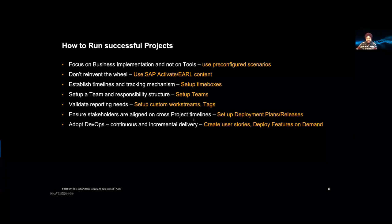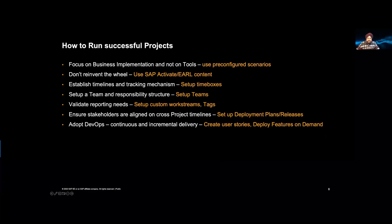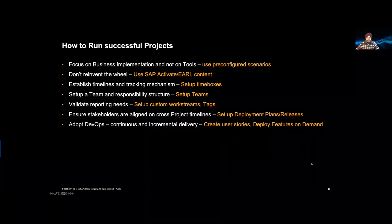Cross-project coordination happens via the deployment plan, which we'll see shortly in the system. Continuous delivery is implemented by breaking requirements into very small pieces called user stories, which fit into a sprint — also called a time box — and then features can be deployed on demand. These are some of the key hints for running projects successfully.